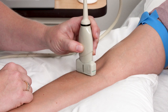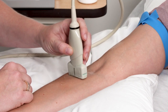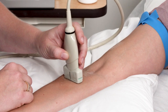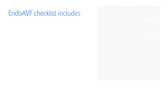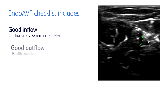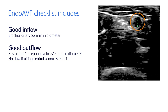Patients considered healthy enough to have a standard endovascular procedure qualify for further assessment for the Wavelink Endo-AVF System procedure. Standard AVF screening includes checking for good inflow with the brachial artery measuring at least 2 millimeters in diameter, and good outflow with either the cephalic or basilic vein measuring at least 2.5 millimeters in diameter and without a flow-limiting central venous stenosis.